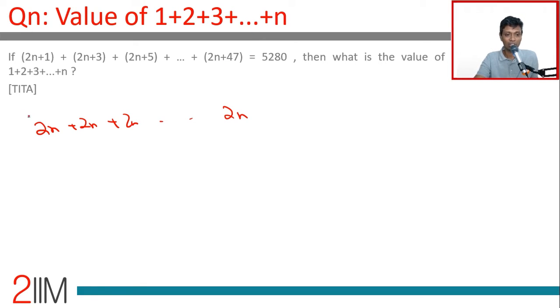There are 24 terms: plus 1 + 3 + 5 + 7, all the way to 47.